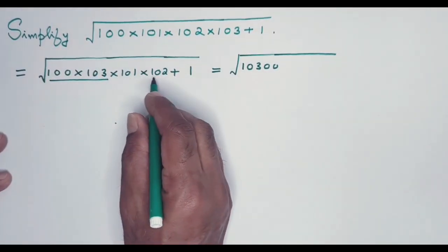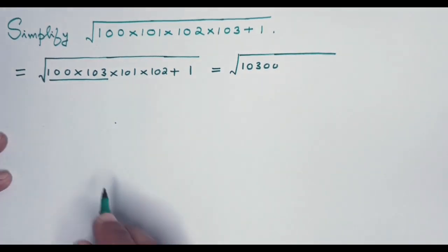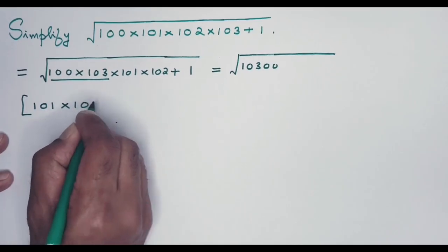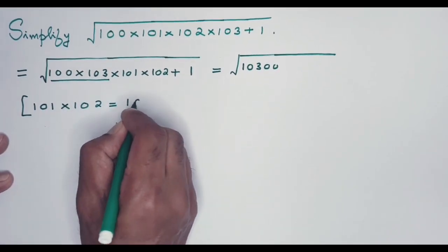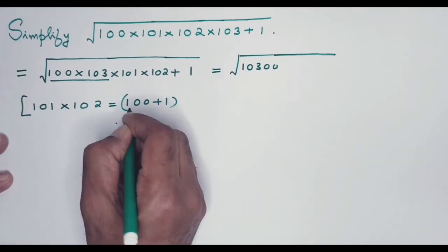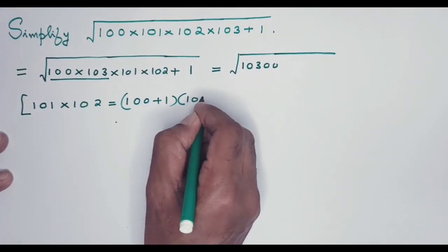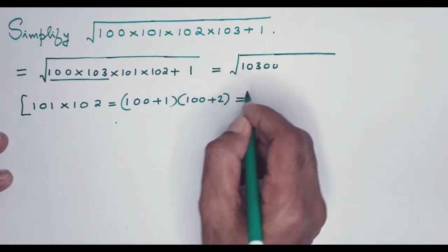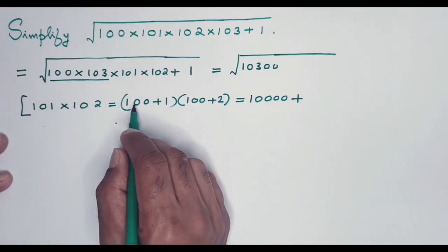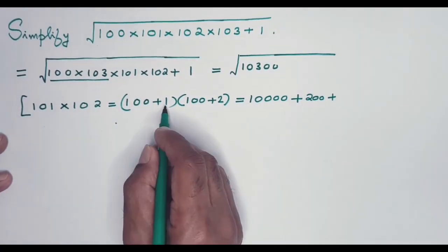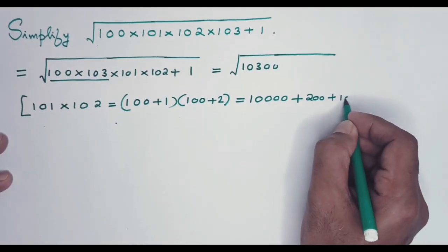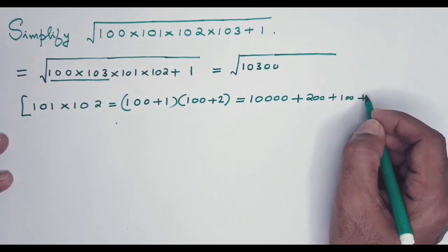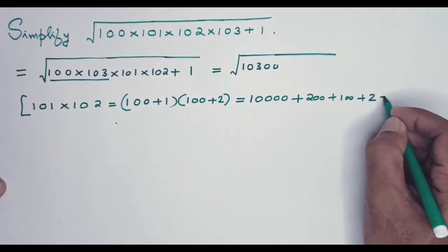Now this you can easily multiply. The first two terms, which will be 103 followed by two zeros, that's what you get as product of these two. Then comes 101 and 102. Let me simplify that separately. See, 101 multiplied by 102 is (100 plus 1)(100 plus 2). Now 100 into 100 is 10,000, 100 into 2 is 200, then 100 into 1 is 100, then the last term 1 multiplied by 2 is just 2.